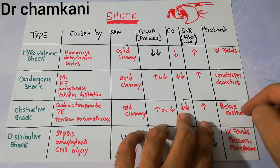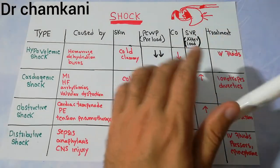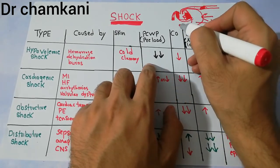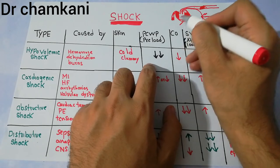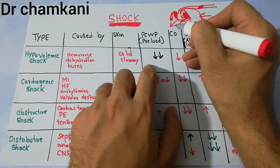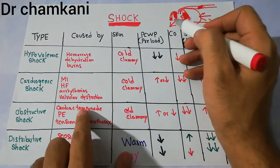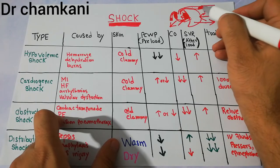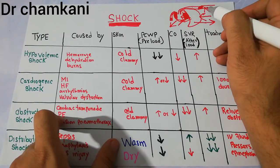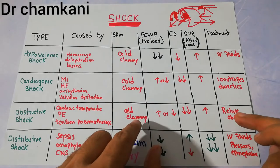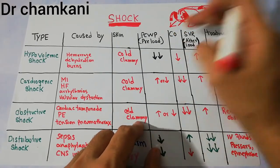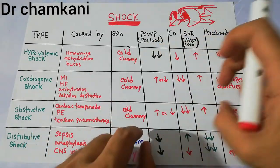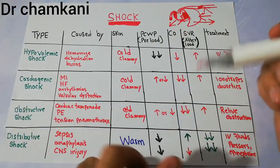Treatment is to relieve the obstruction. In tension pneumothorax, a needle is inserted to remove the air and resolve the problem. In cardiac tamponade, a needle is inserted and the fluid or blood is aspirated out to relieve the obstruction. In pulmonary embolism, a thrombolytic agent is administered to dissolve the clot — a process known as thrombolysis. Relieving the obstruction through these methods are the treatment options for obstructive shock.